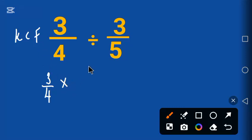And F stands for flip. So flip means 5 will go up, that is invert, and then 3 will come down. So we have 5 over 3.